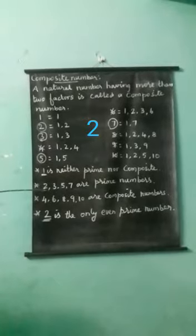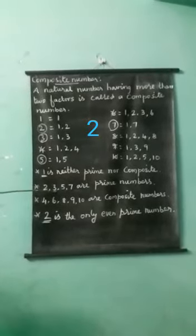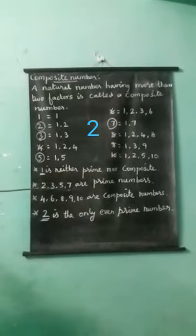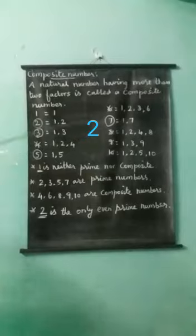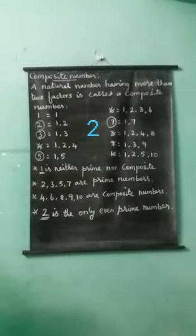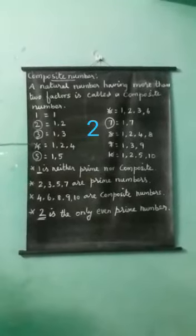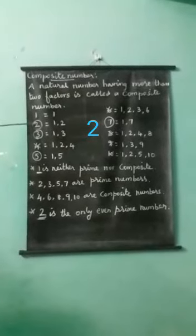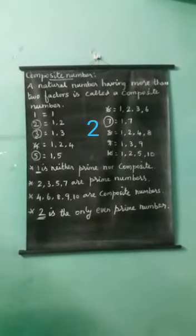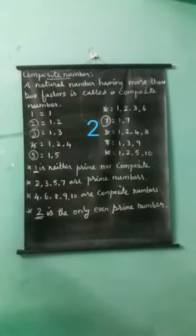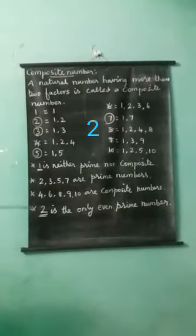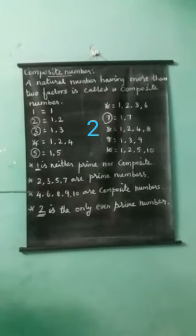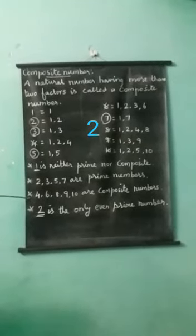Then the second point: 2, 3, 5, and 7 are prime numbers. See the numbers — the circled numbers. 2, 3, 5 and 7 are the prime numbers. Understood?